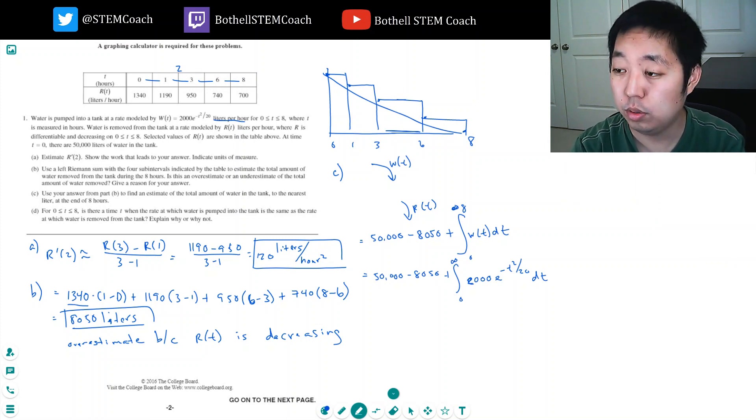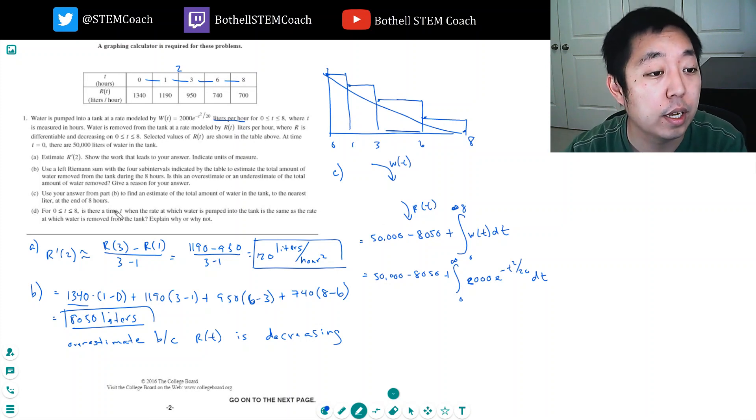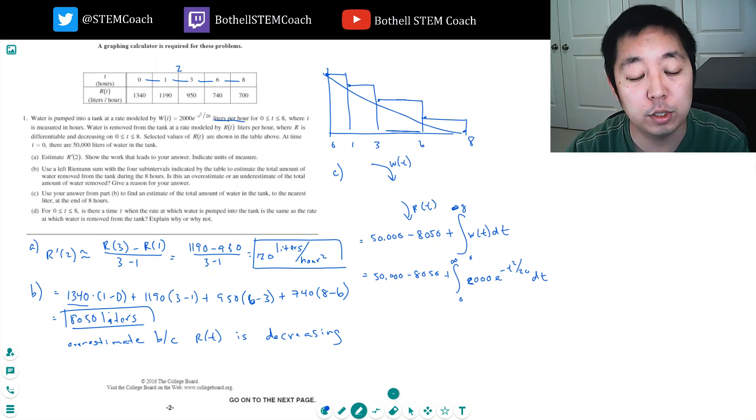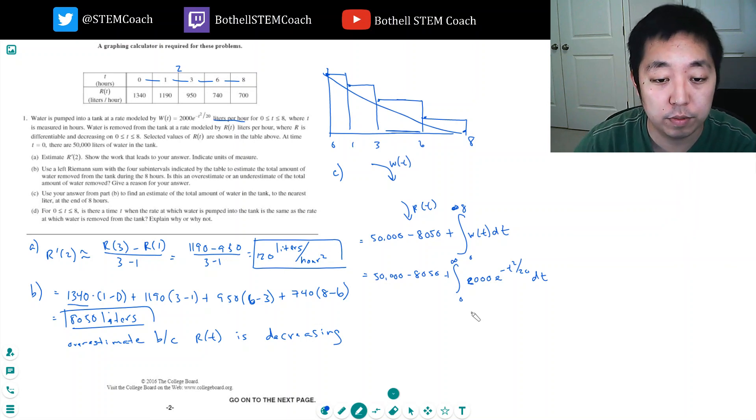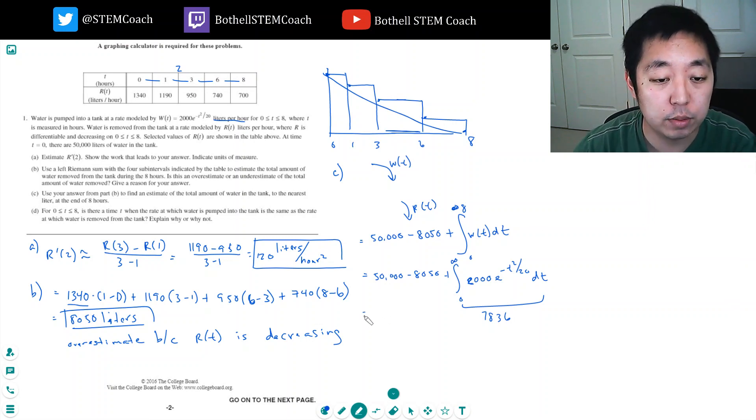2000 times e to the minus x squared over 20, and we're going to integrate from zero to eight. A graphing calculator—you need to know how to enter an integral into your graphing calculator. The tricky part is there's so many different calculators; they're very similar but always a little bit different.